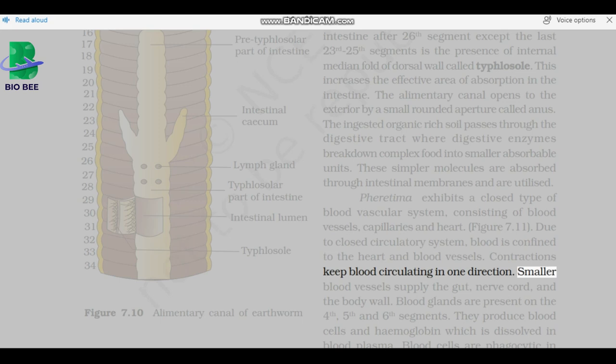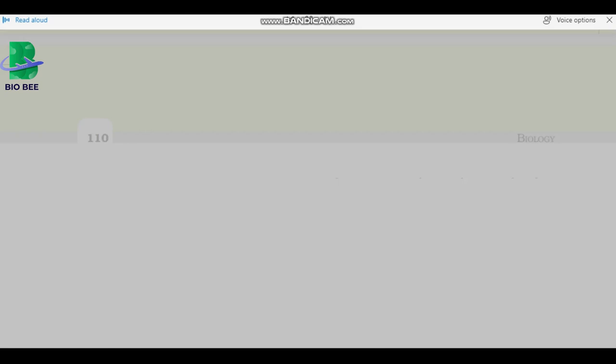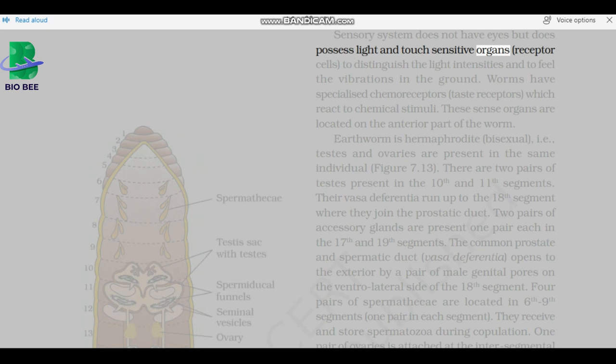Smaller blood vessels supply the gut, nerve cord, and the body wall. Blood glands are present on the 4th, 5th, and 6th segments. They produce blood cells and hemoglobin which is dissolved in blood plasma. Blood cells are phagocytic in nature. Earthworms lack specialized breathing devices. Respiratory exchange occurs through moist body surface into their bloodstream. Sensory system does not have eyes but does possess light and touch sensitive organs, receptor cells to distinguish the light intensities, and to feel the vibrations in the ground.